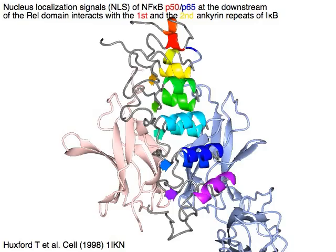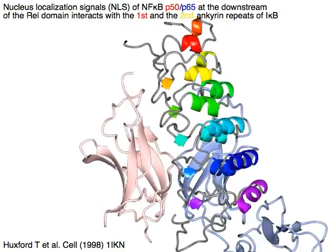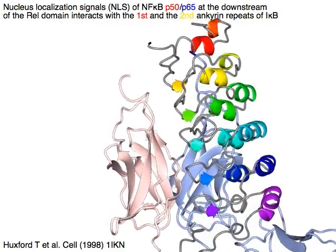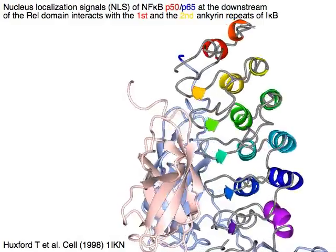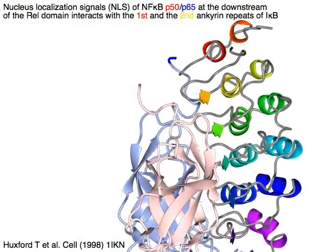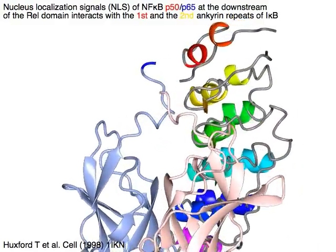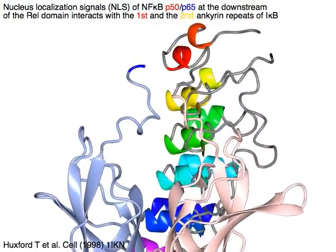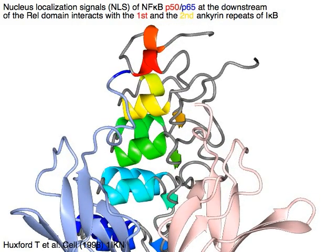Nucleus localization signals or NLS in blue of NF-Kappa B P50/P65 at the downstream of the rel domain, in light blue, interact with the first and the second anchorin repeats of I-Kappa B in red and yellow.